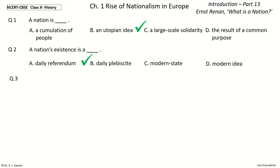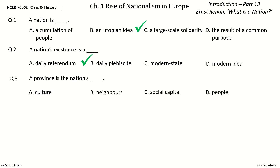Question 3. A province is the nation's dash. The options are: culture, neighbours, social capital, people. And the answer is people. A province is the nation's people.